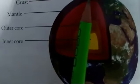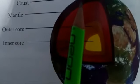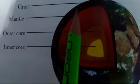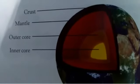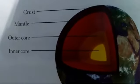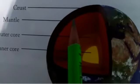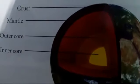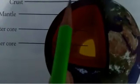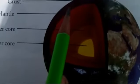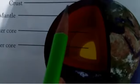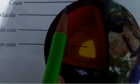The lithosphere is a layer that includes the crust and the uppermost portion of the mantle. The lithosphere is about 100 kilometres thick.